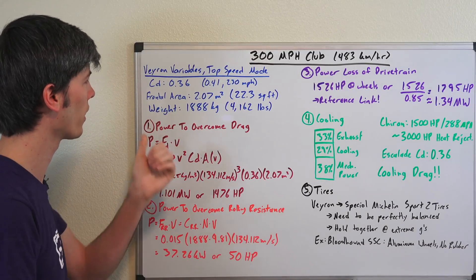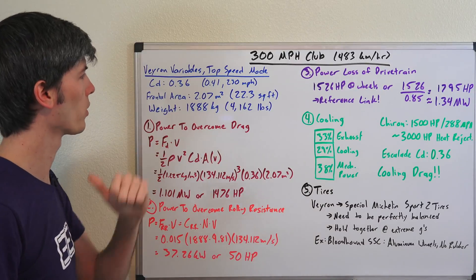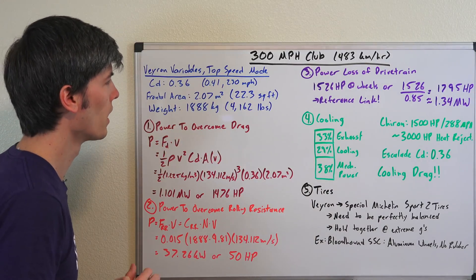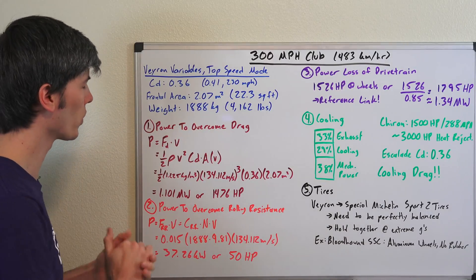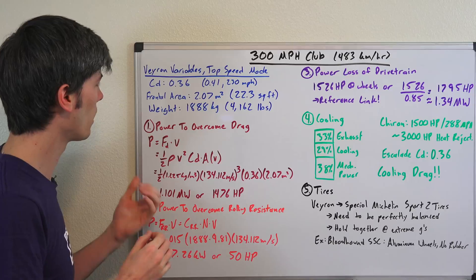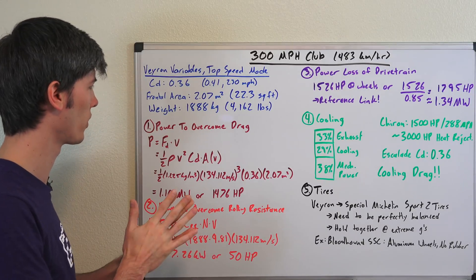So looking at the Bugatti Veyron, it has a drag coefficient when it's in top speed mode lowered down of 0.36. This is versus 0.41 with a top speed of 230 miles per hour when it's not in this top speed mode. Frontal area of 2.07 meters squared or 22.3 feet squared. Weight of 1888 kilograms or 4,162 pounds.